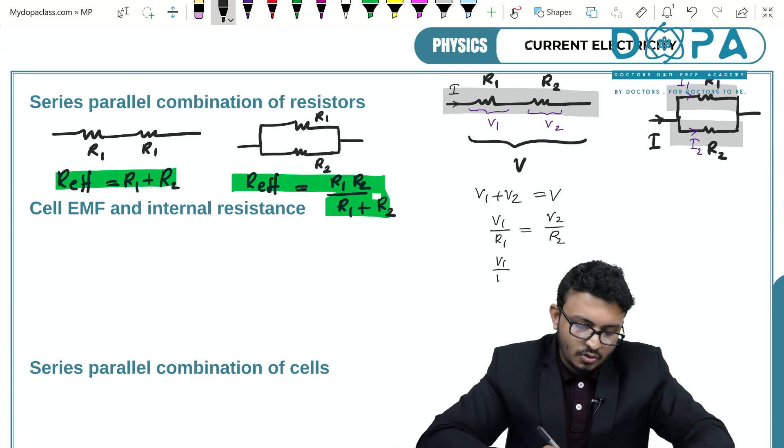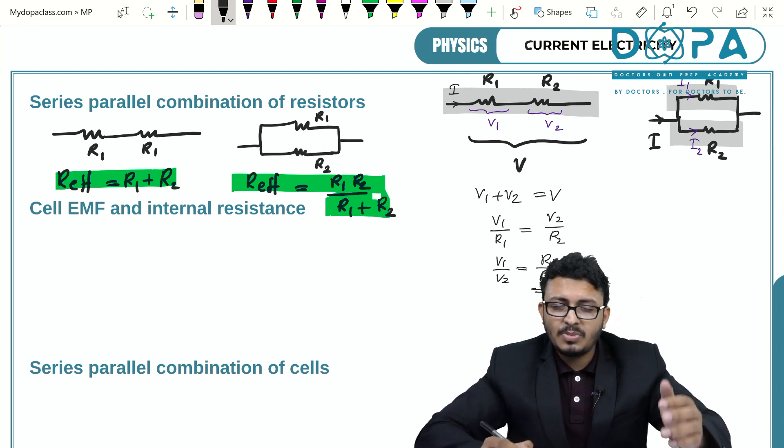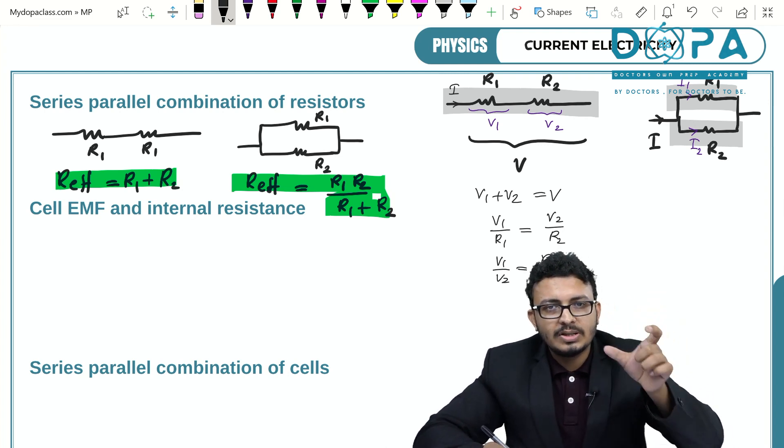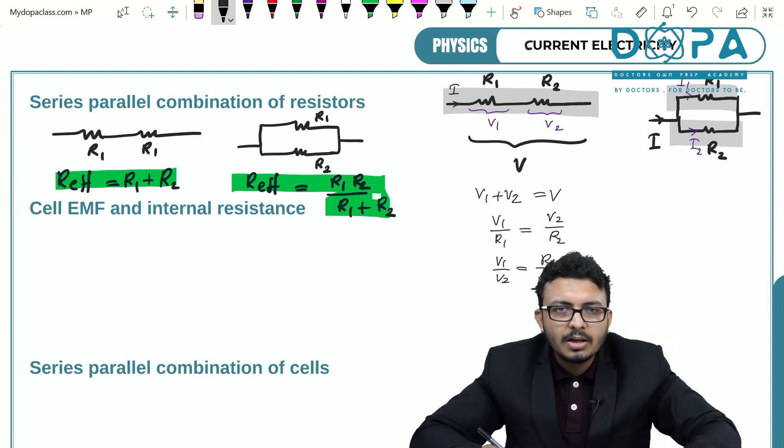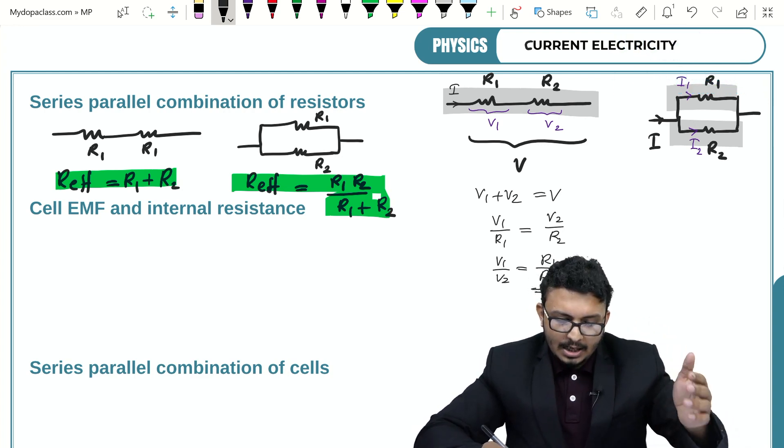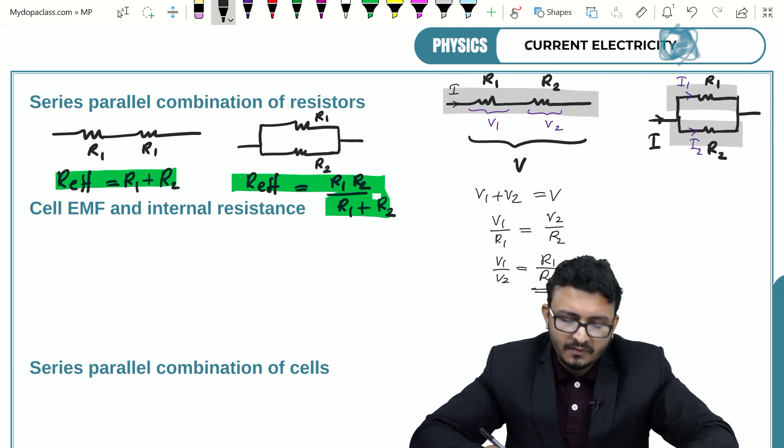Now V1 by V2 is equal to R1 by R2. That means the ratio of potential differences across these resistors is R1 by R2, and the total potential difference is V.